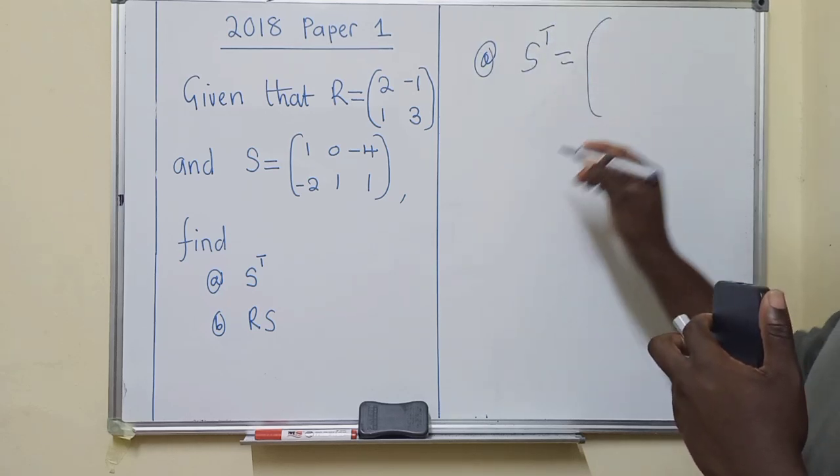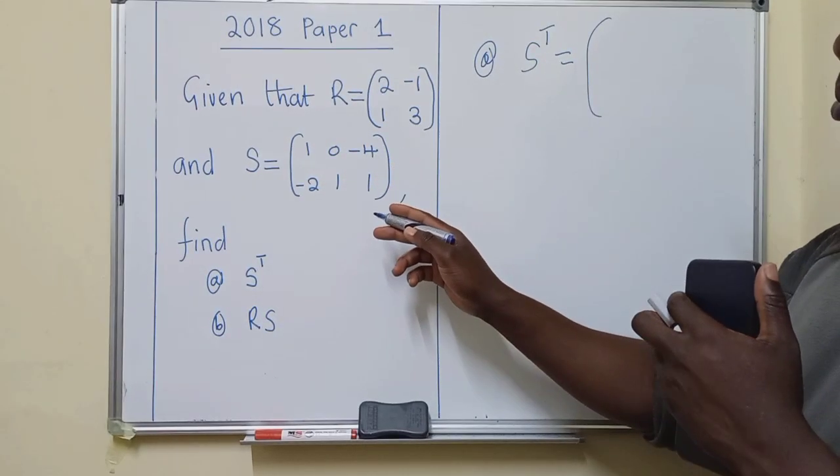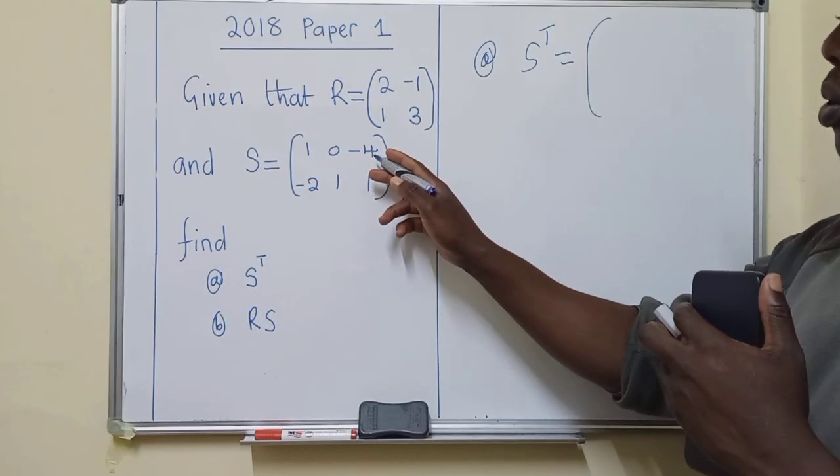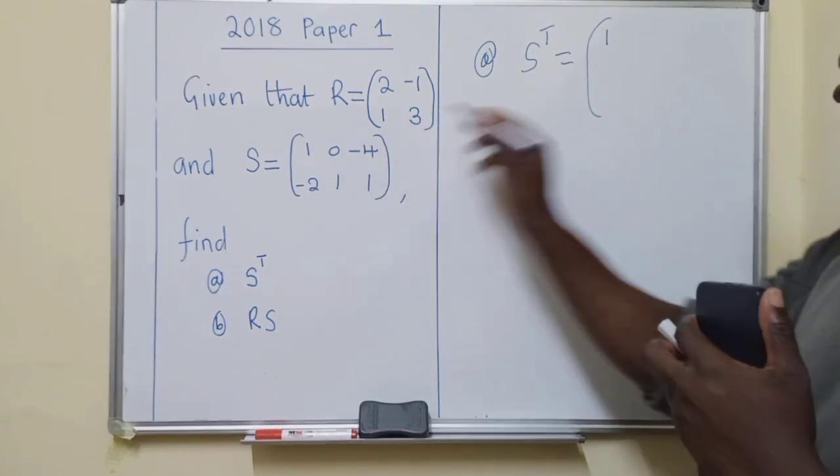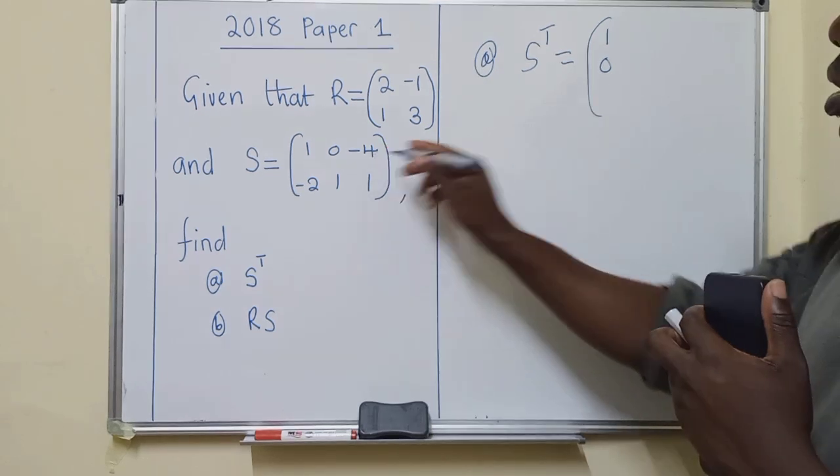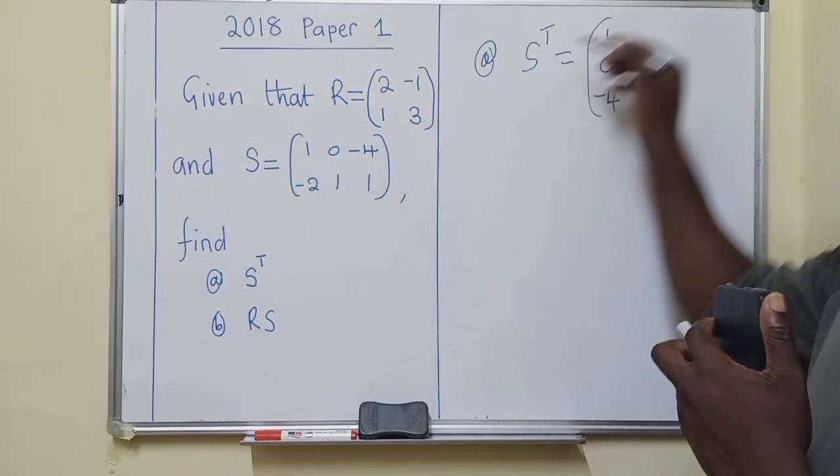Transpose means change the row become a column. Change this row, make it a column. So we'll start with a 1, this one, next 0, next a negative 4. So it was like this, now it's like this.